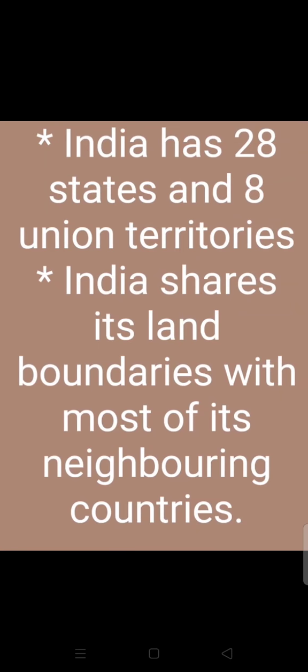India occupies a significant strategic position in South Asia. India has 28 states and 8 Union Territories. India shares its land boundaries with Pakistan and Afghanistan in the northwest, China, Nepal and Bhutan in the north, and Myanmar and Bangladesh in the east. Our southern neighbors across the sea are the two island countries — Sri Lanka and the Maldives. Sri Lanka is separated from India by a narrow channel formed by the Palk Strait and the Gulf of Mannar, and the Maldives Islands are situated to the south of the Lakshadweep Islands.